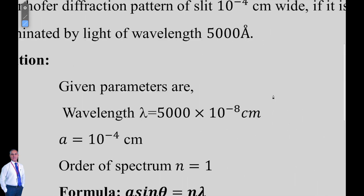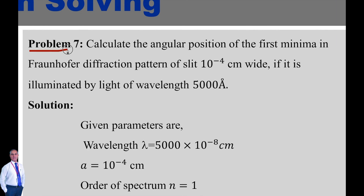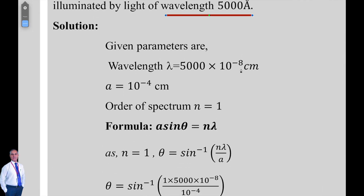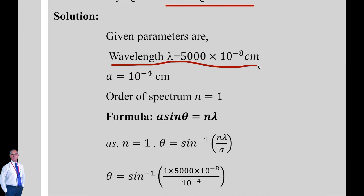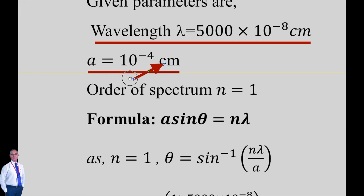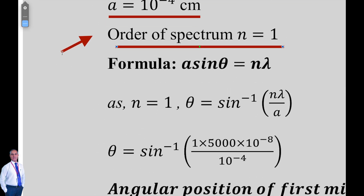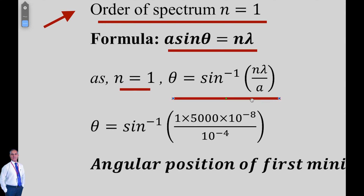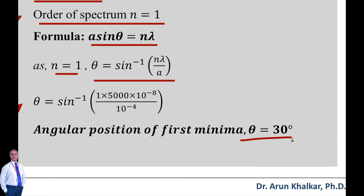Problem number 7, which is based on Fraunhofer diffraction. Calculate the angular position of the first minima in a diffraction pattern of a slit 10⁻⁴ centimeter wide, illuminated by light of wavelength 5000 angstrom units. Given: λ = 5000 × 10⁻⁸ cm, a = 10⁻⁴ cm, n = 1. Using a·sin(θ) = nλ, θ = sin⁻¹(1 × 5000 × 10⁻⁸ / 10⁻⁴). Angular position of first minima θ = 30 degrees.